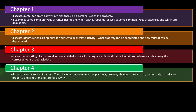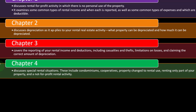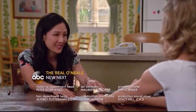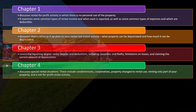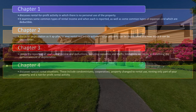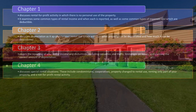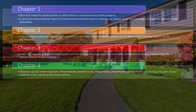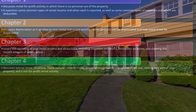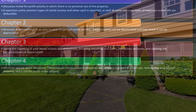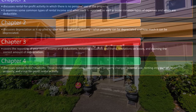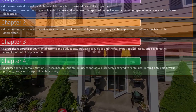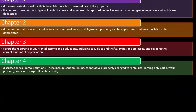Chapter four discusses special rental situations, including condominiums, cooperatives, property changed to rental use — which is complex because the basis is harder to determine if you converted rather than purchased it — renting only part of your property, and not-for-profit rental activity. When you rent only part of a property, you have to break out personal versus business use to properly calculate everything.